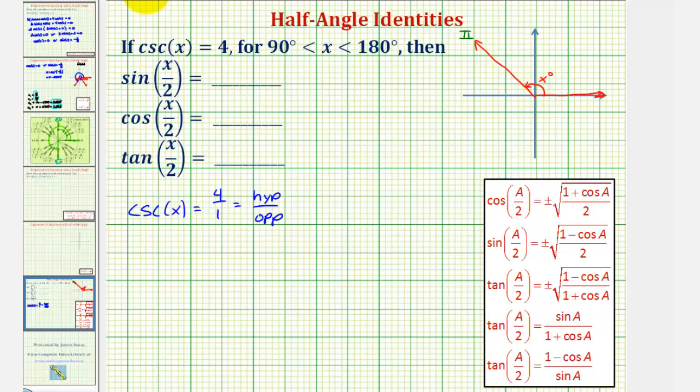So this would be x degrees, and now if we sketch the reference triangle for this angle, it would be this triangle here.